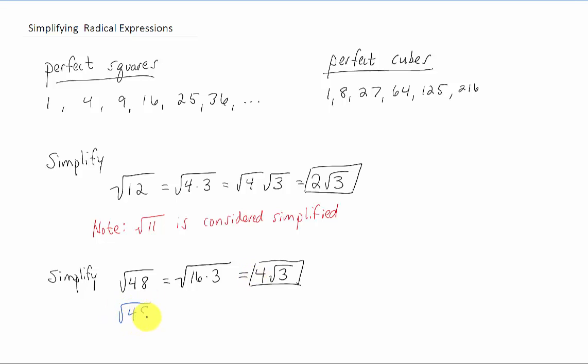Now you might be asking, what if I didn't see that right away? What if I saw the square root of 48 and I thought, well, we can split that up into four times 12. Okay, that's great. The square root of four is two, and the square root of 12 actually can be simplified further now. We can split 12 then up into four times three.